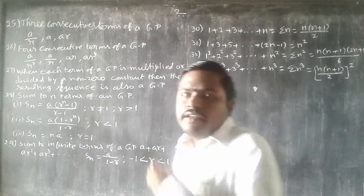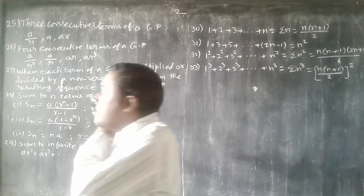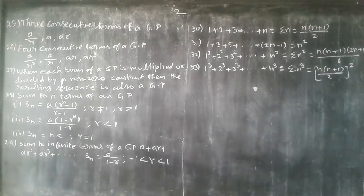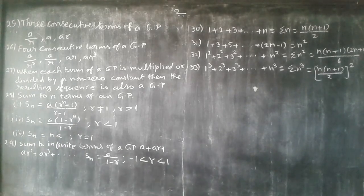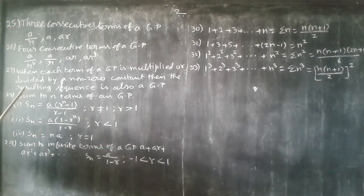Okay, listen. Next comes the 25th of our law. Three consecutive terms of a GP: A by R, A, AR.